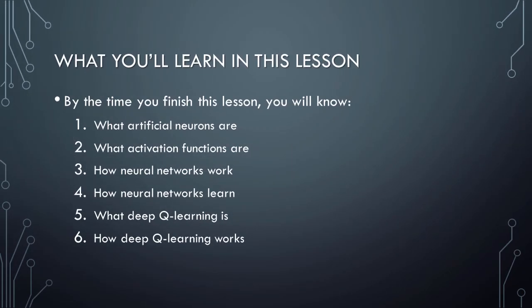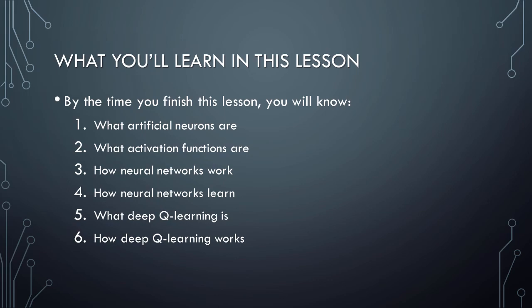Before we begin discussing the foundations of artificial neural networks and deep Q learning, let's briefly review what you'll learn in this lesson. By the time you have finished this video, you will know what artificial neurons are, what activation functions are, how neural networks work, how neural networks learn, what deep Q learning is, and how deep Q learning works. Once we understand all of these concepts, we'll be fully equipped to start building some AI models that rely on artificial neural networks and deep Q learning. Let's get started.